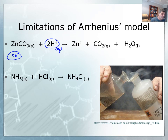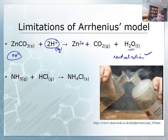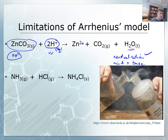Here's an example of a reaction: zinc carbonate plus an acid producing zinc ions, carbon dioxide and water. We know this is an example of a neutralization reaction. If it's a neutralization reaction that's produced water and carbon dioxide then it gets a tick — we must have an acidic substance and a basic substance. So the H+ ions fit our Arrhenius model nicely, but the zinc carbonate does not.